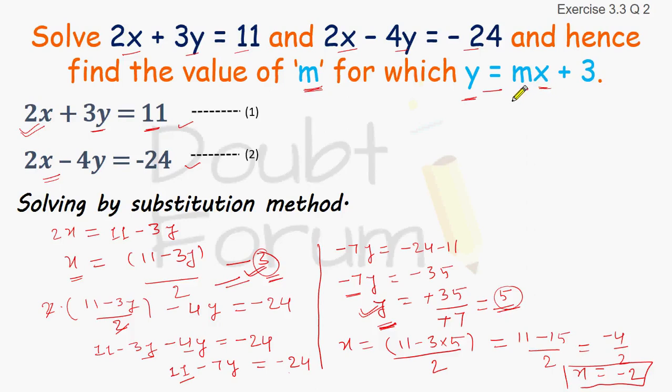In this equation, we have the value of y and x. There is only one unknown, which is m. So we can easily find the value of m by putting the value of x and y. We will put the value of y as 5 equals m into x.